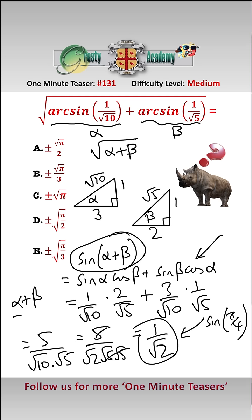Therefore alpha plus beta equals π/4, so the square root of that is the square root of π/4, which is plus or minus root π over 2, answer A.